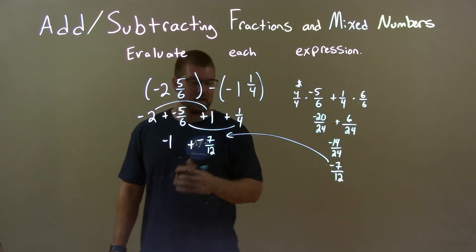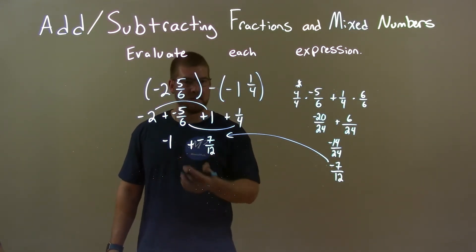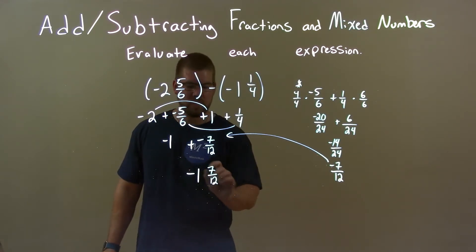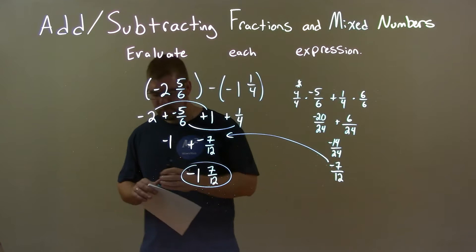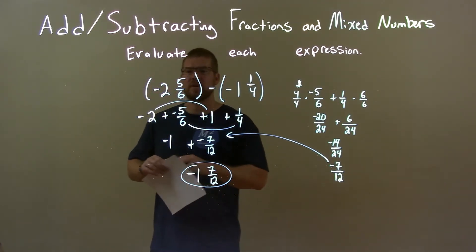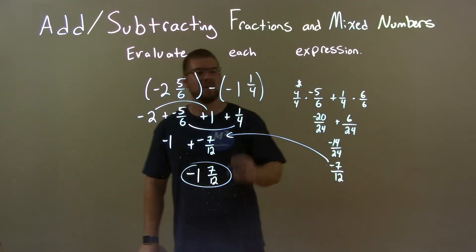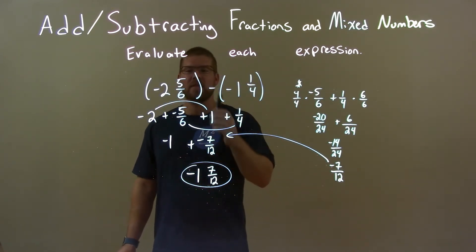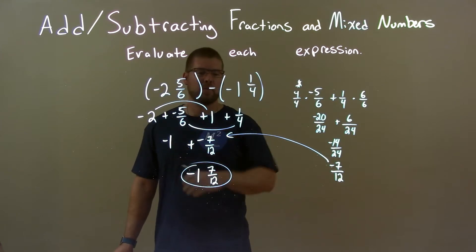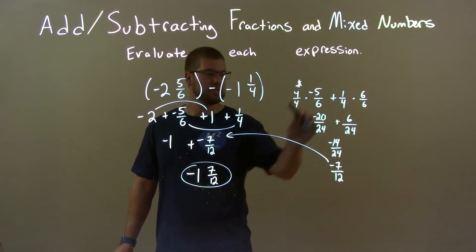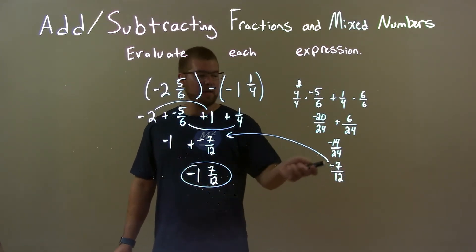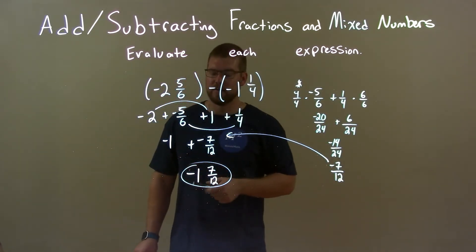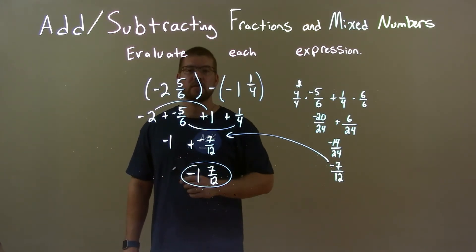So negative 1 plus negative 7/12 gives us negative 1 and 7/12. That's our final answer. Quick recap: we were given negative 2 and 5/6 minus a negative 1 and 1/4. Subtracting a negative is the same thing as adding a positive. I broke these down to be whole numbers and proper fractions, added the whole numbers, then added the fractions and simplified — giving negative 7/12 — then combined with negative 1 for a final answer of negative 1 and 7/12.